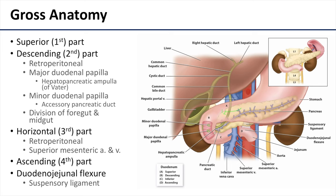It's within the second part of the duodenum that we have that division between embryonic foregut and midgut. The third or horizontal part of the duodenum is retroperitoneal, and it's crossed over by the superior mesenteric vein and superior mesenteric artery.